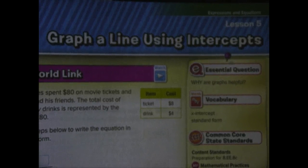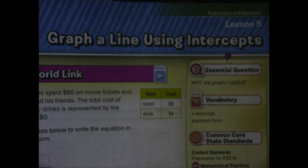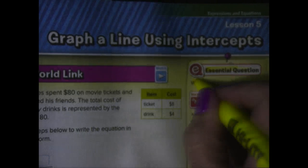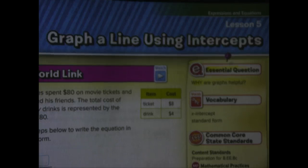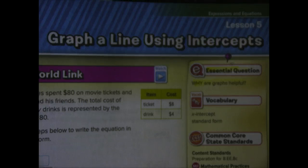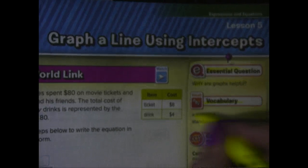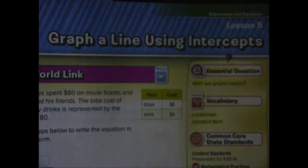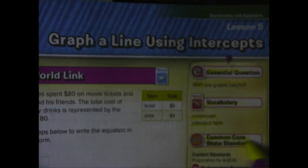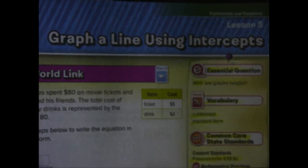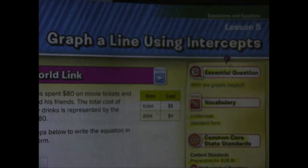Okay, let's take a look at Lesson 5, Graph a Line Using Intercepts. Lesson 5 begins on page 209 in Volume 1 of your book. Again, our essential question is, why are graphs helpful? Now, in the last two lessons, we've looked at graphs and we've interpreted what the y-intercept and the slope mean. Our vocabulary, we're going to add the word x-intercept and standard form. So we're going to learn another form of an equation. In our Common Core State Standards, we are preparing for EE.8c, and we'll go through what that is in class.